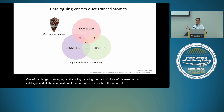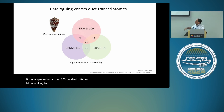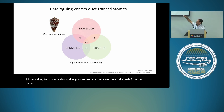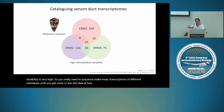Each species has around 200–300 different mRNAs coding for conotoxins. Looking at three individuals from the same species, they only have 25 transcripts in common — all the others are different. So the variability is very high. You really need to sequence transcriptomes of many individuals to get a good idea of how many conotoxins each species produces.